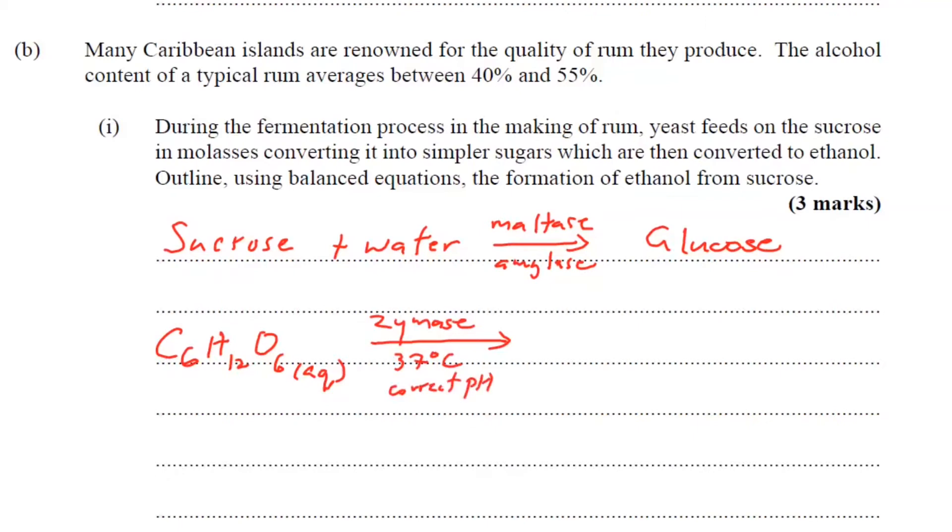Then we're going to show how glucose is converted to ethanol. We're going to use the formula of glucose that we're expected to know at this level. C6H12O6, which would be in solution in aqueous. In the presence of zymase, that's the enzyme in yeast, optimum temperature 37 degrees Celsius and at the correct pH. This will give us alcohol, ethanol, C2H5OH, which will be in aqueous medium. It's a liquid, but it would be in aqueous medium and would also get carbon dioxide, which is a gas. That's pretty much what happens during fermentation. And we're just checking to ensure that our equation is balanced. We need two carbon dioxide. That should be it.